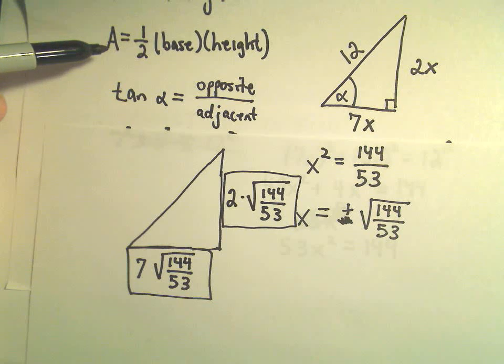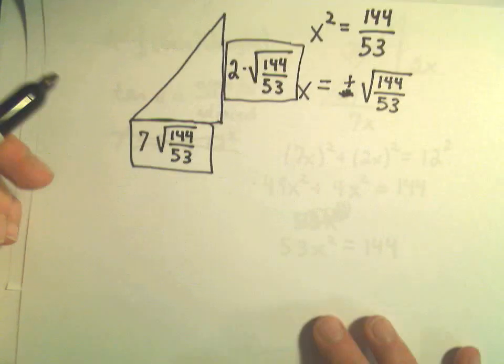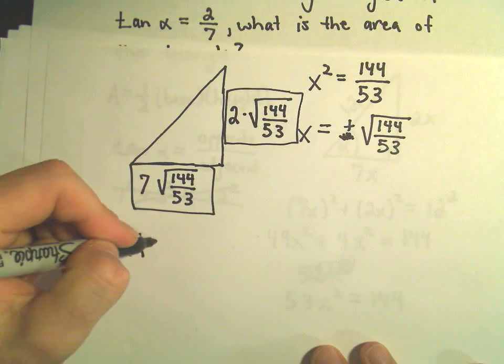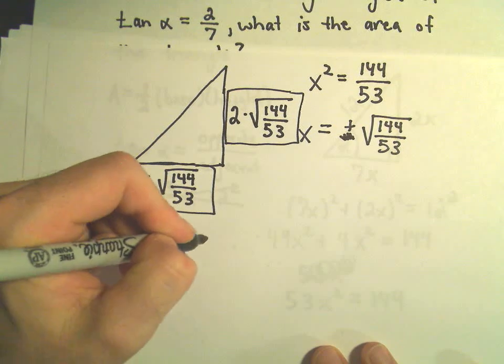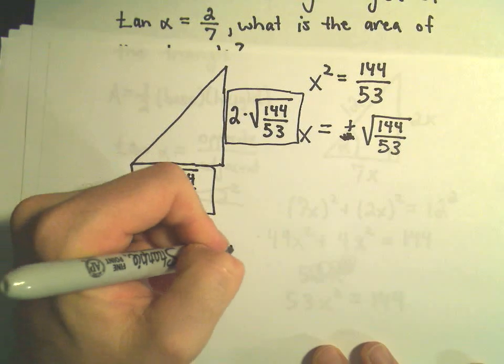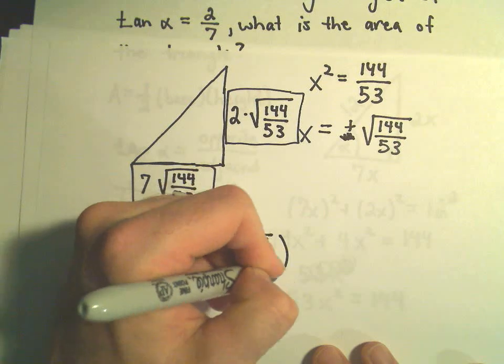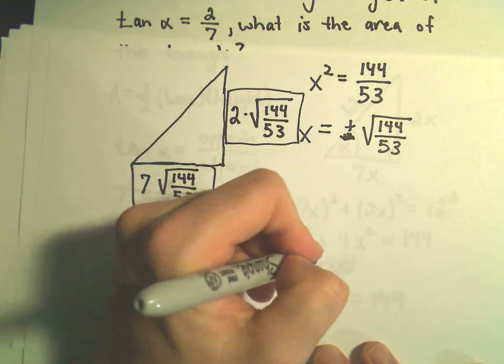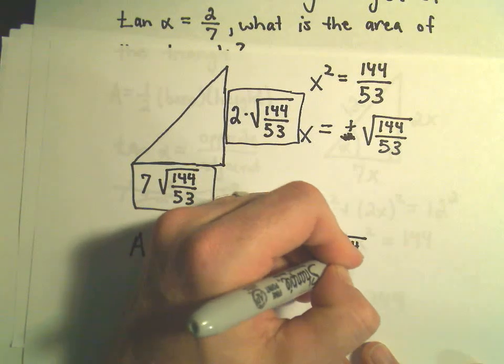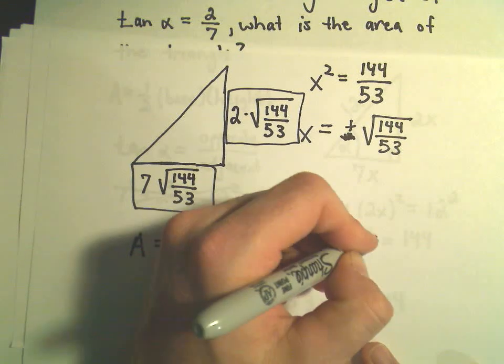The area is 1 half base times height. So, it says the area is going to be 1 half the length of the base, which is 7 times the square root of 144 over 53, times the height, which is 2 times the square root of 144 over 53.